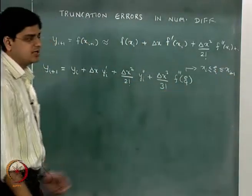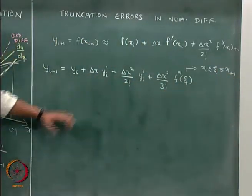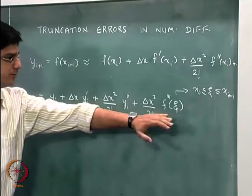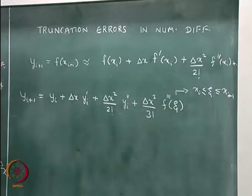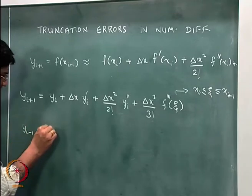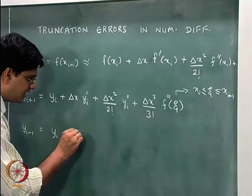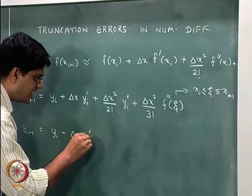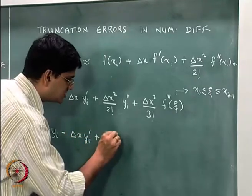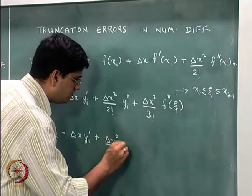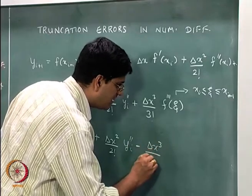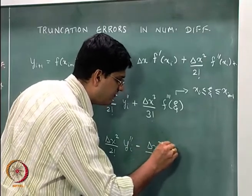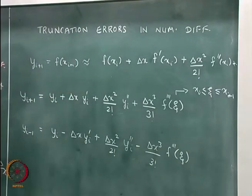We get this using the mean value theorem. Likewise, we will write y(i-1) as y(i) minus delta x times y'(i), plus delta x squared by 2 factorial times y double dash i, minus delta x cubed by 3 factorial times f triple dash of zeta.